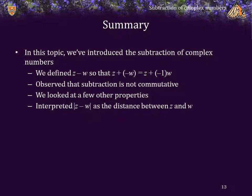In summary, in this topic we've introduced the subtraction of complex numbers. We just defined z minus w to be z plus the additive inverse of w. We observed that subtraction is not commutative. We looked at a few other properties, but most importantly, we defined the absolute value of z minus w to be the distance between the two complex numbers z and w.